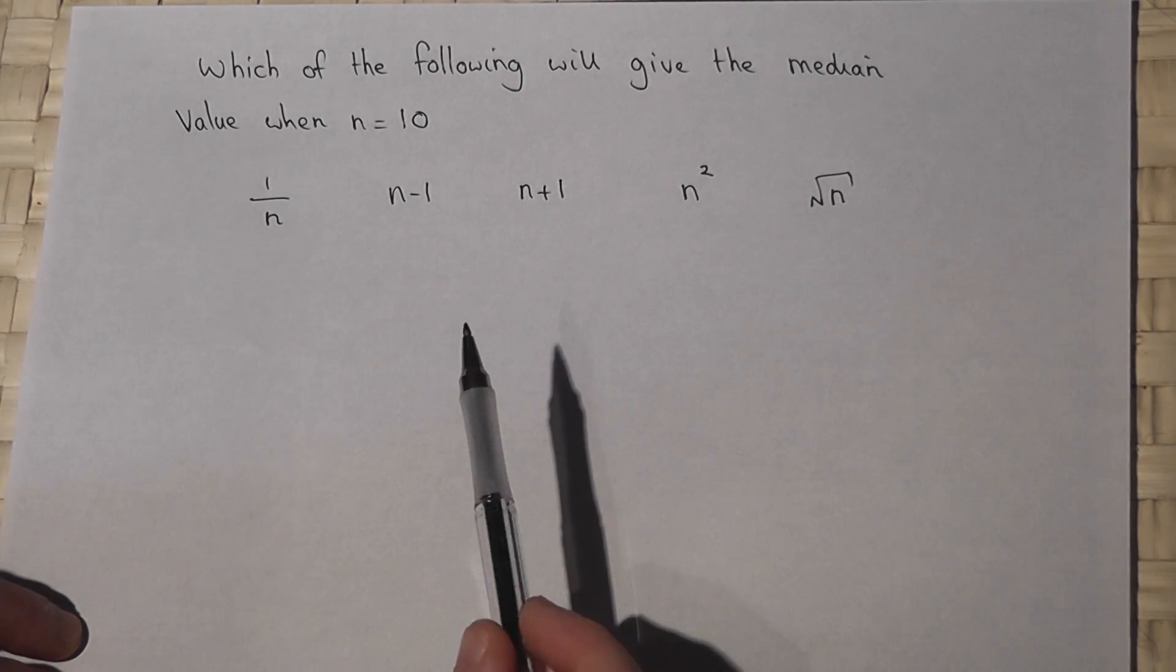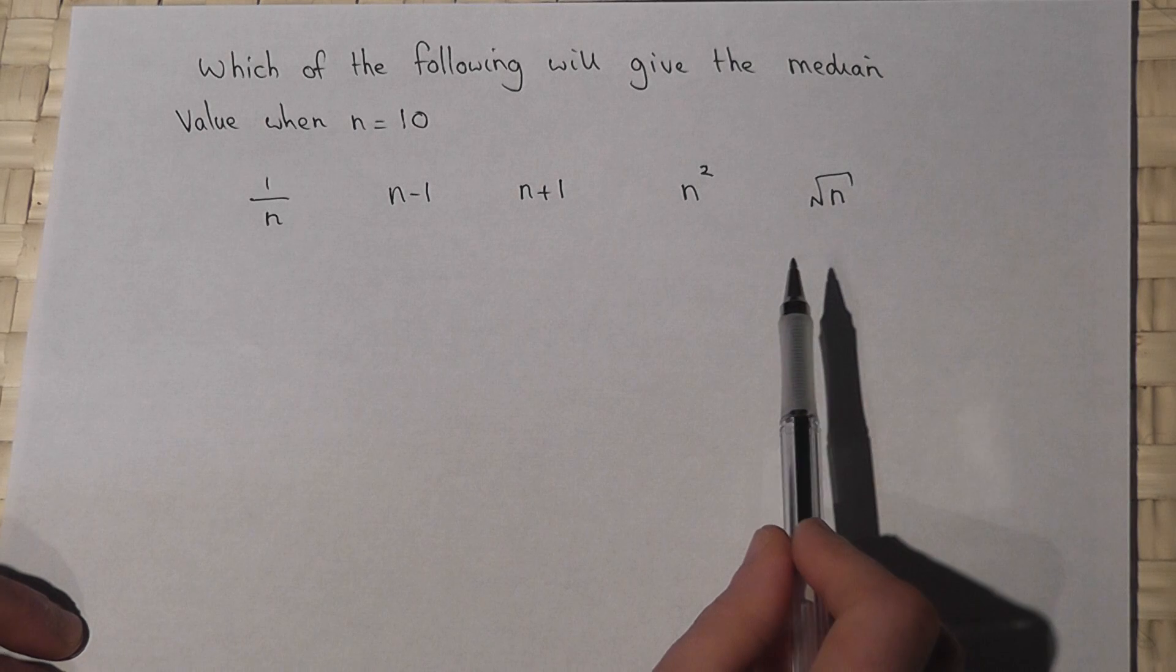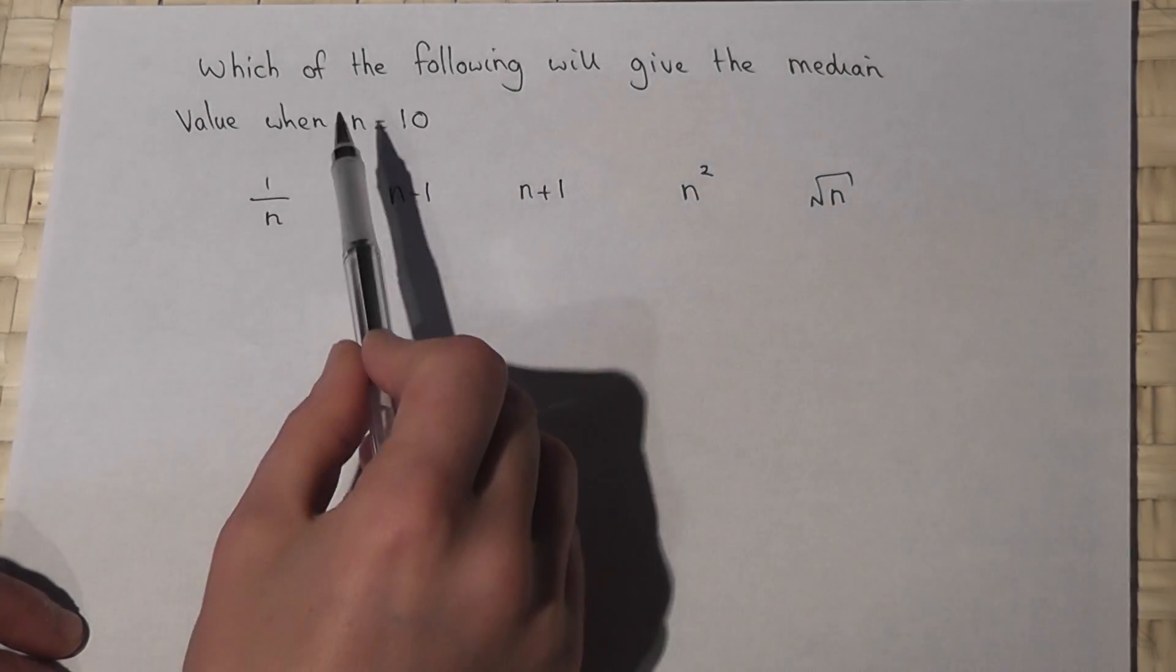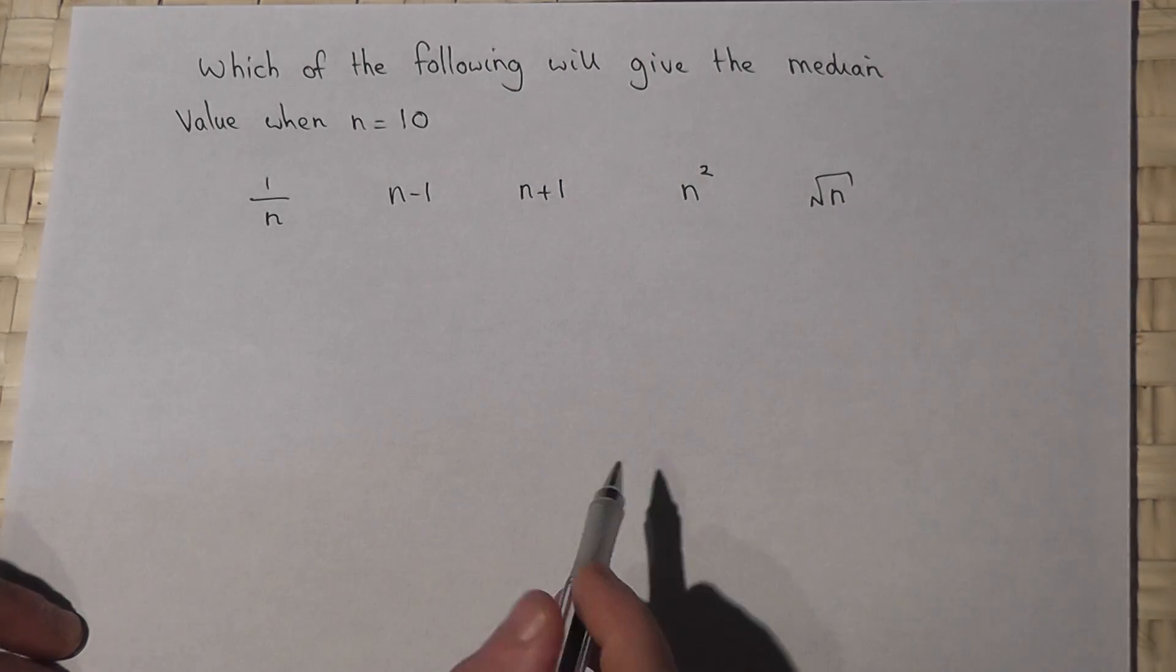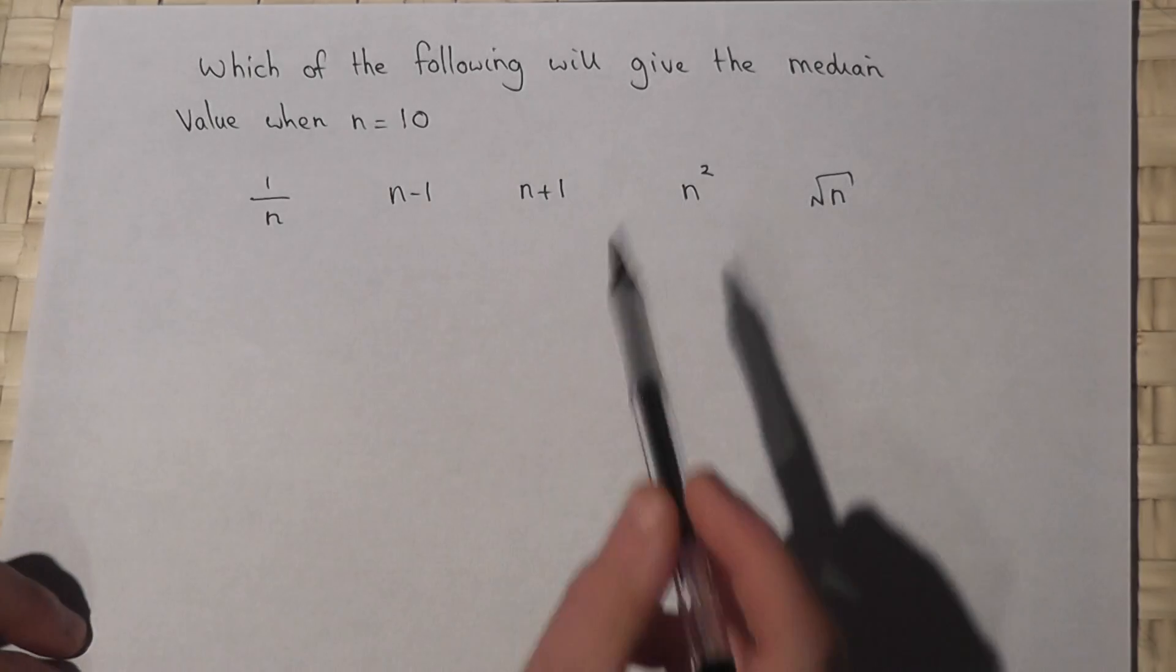In this video, we're given three expressions in terms of n, and we're asked to write down which of them will be the median when n equals 10. So we're going to work out what the value of each of these is when n is 10.